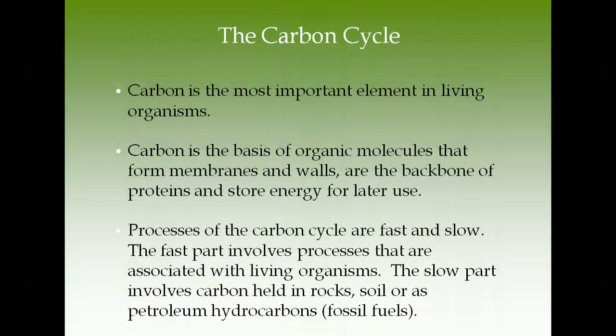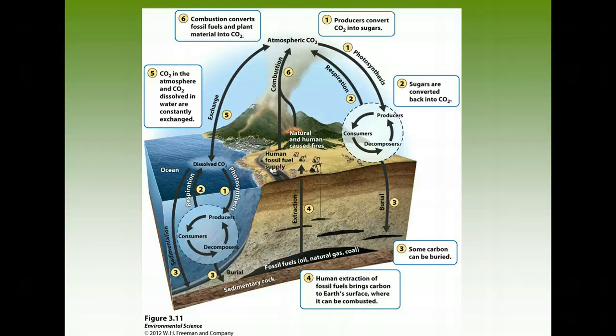The next cycle is the carbon cycle. Carbon is the most important element in living organisms — it forms membranes and walls, is the backbone of proteins, and stores energy for later use. There are two parts to the carbon cycle: fast and slow. The fast part involves processes associated with living organisms. The slow part involves abiotic factors such as rocks, soil, or fossil fuels once they are formed.